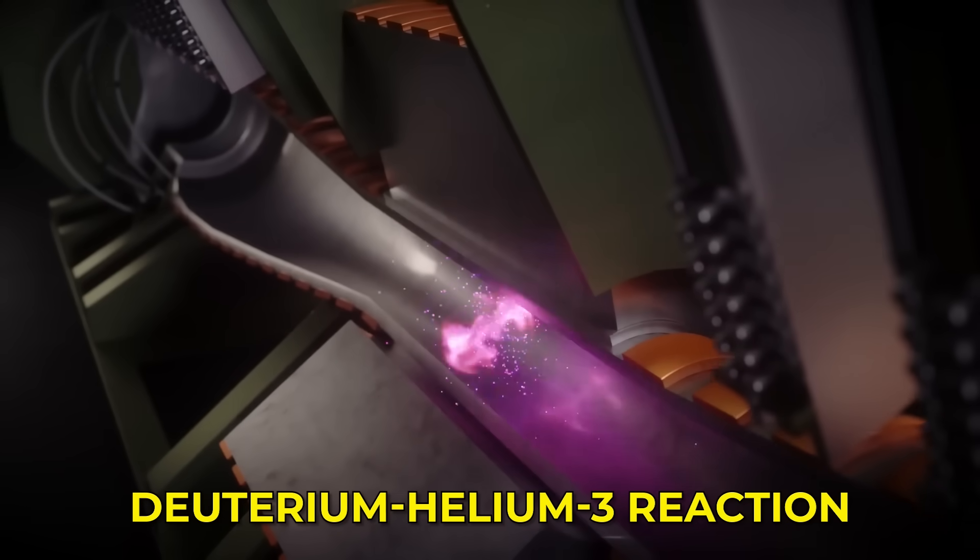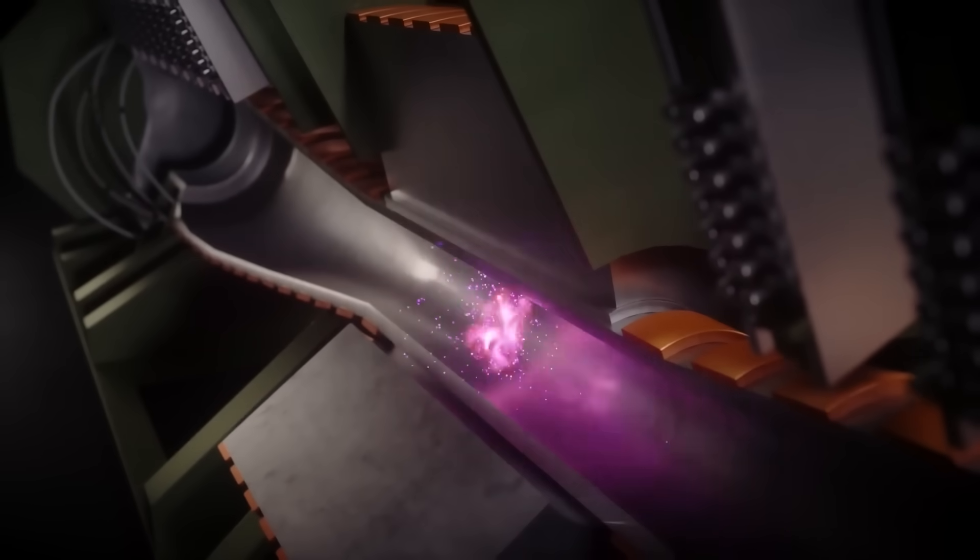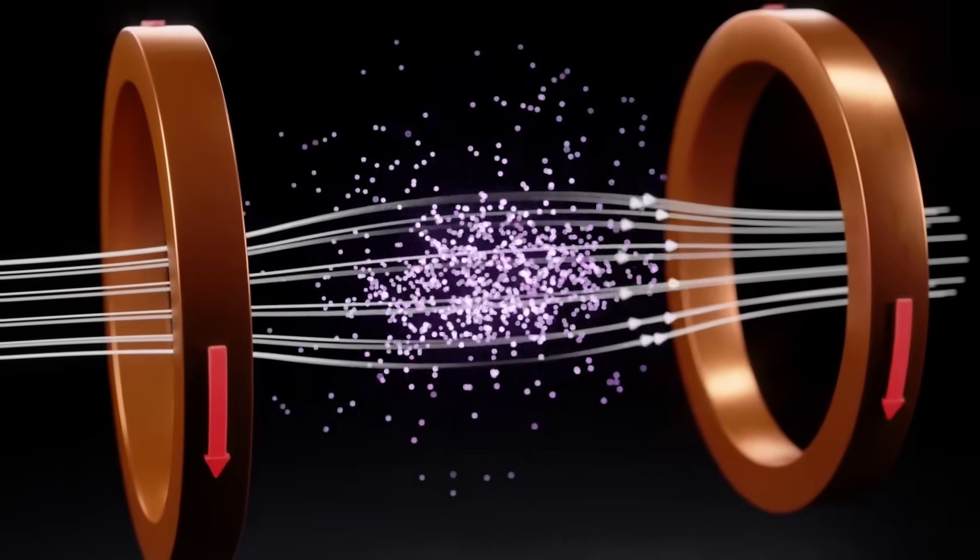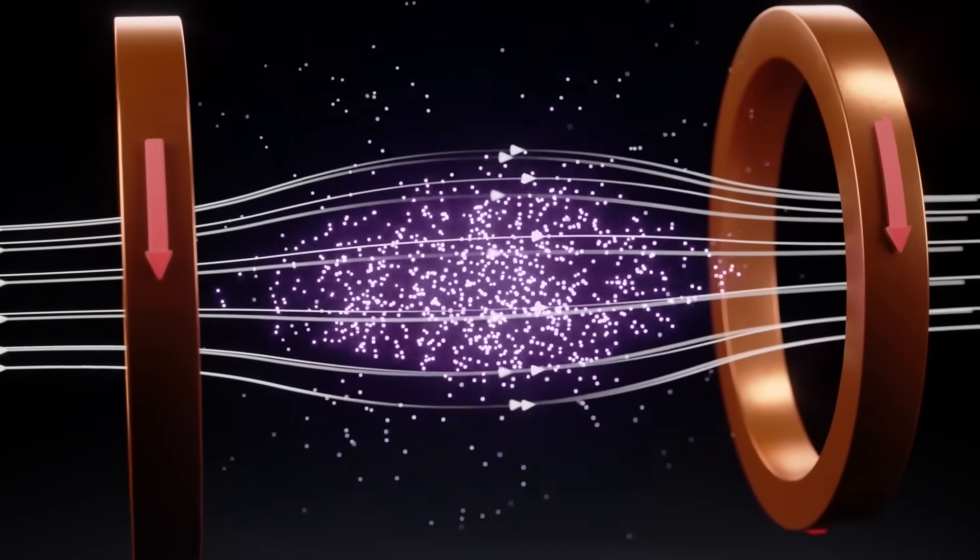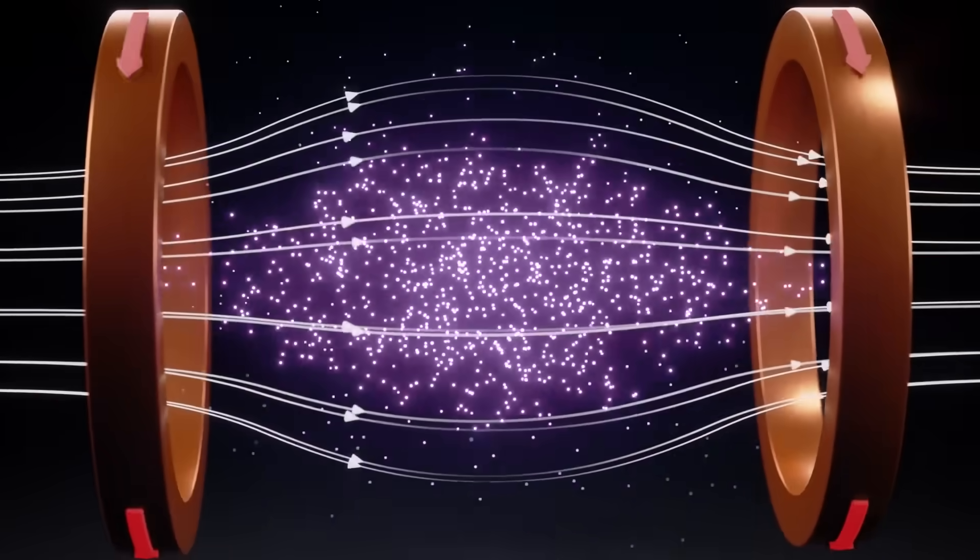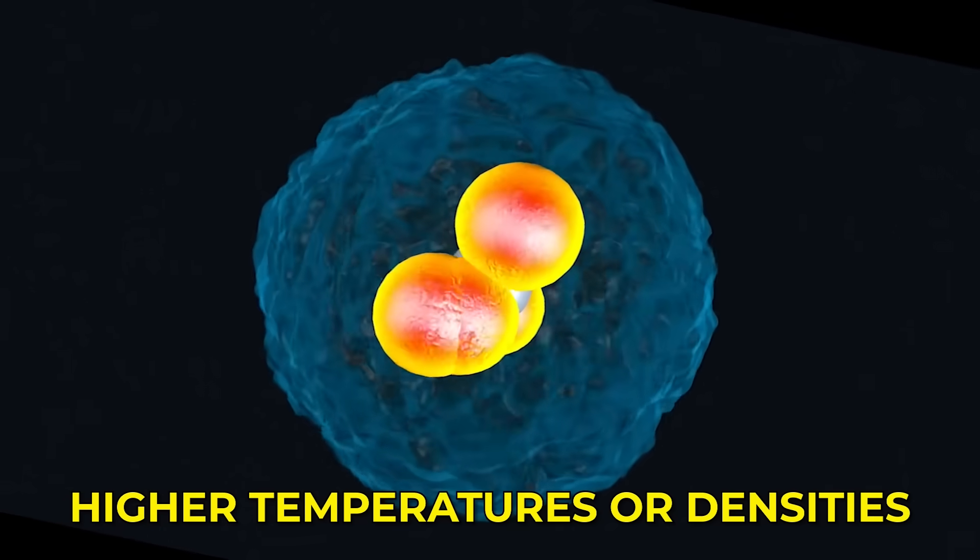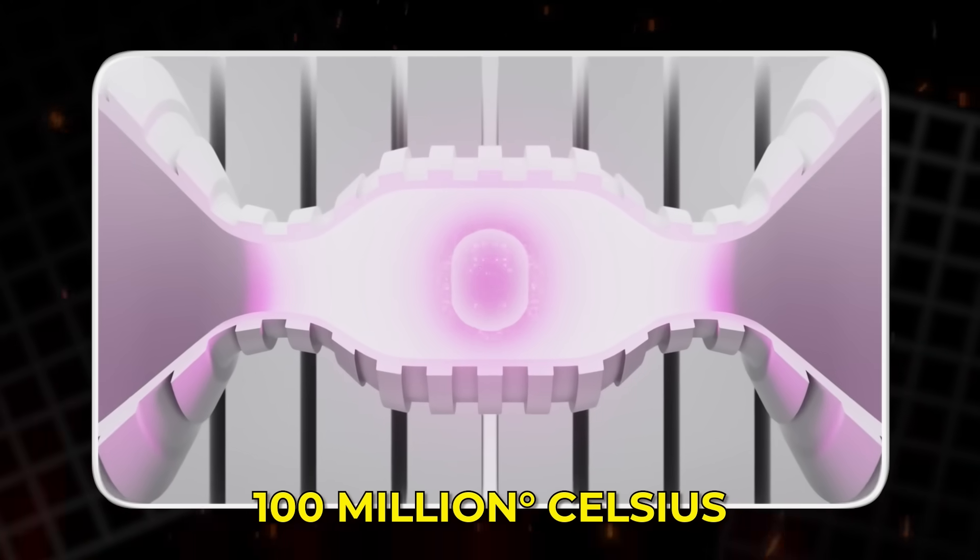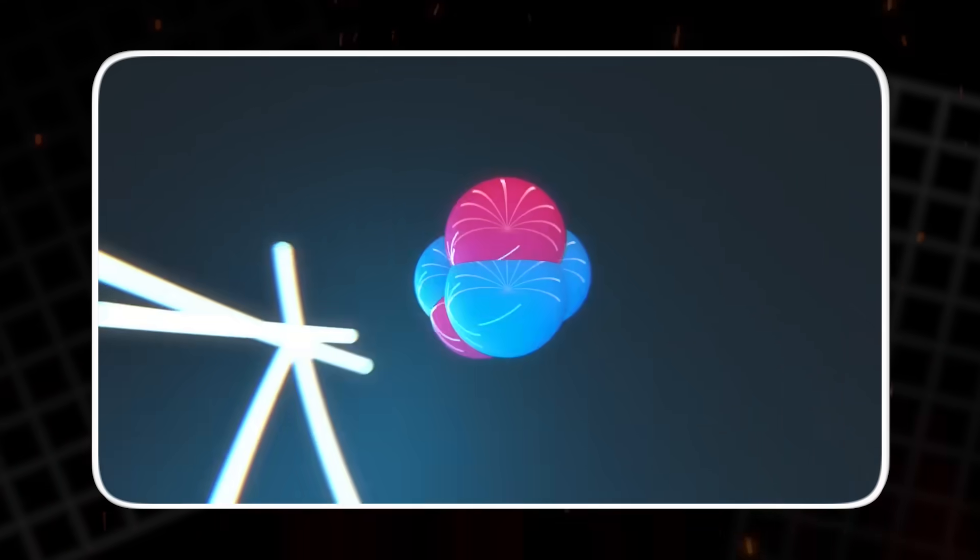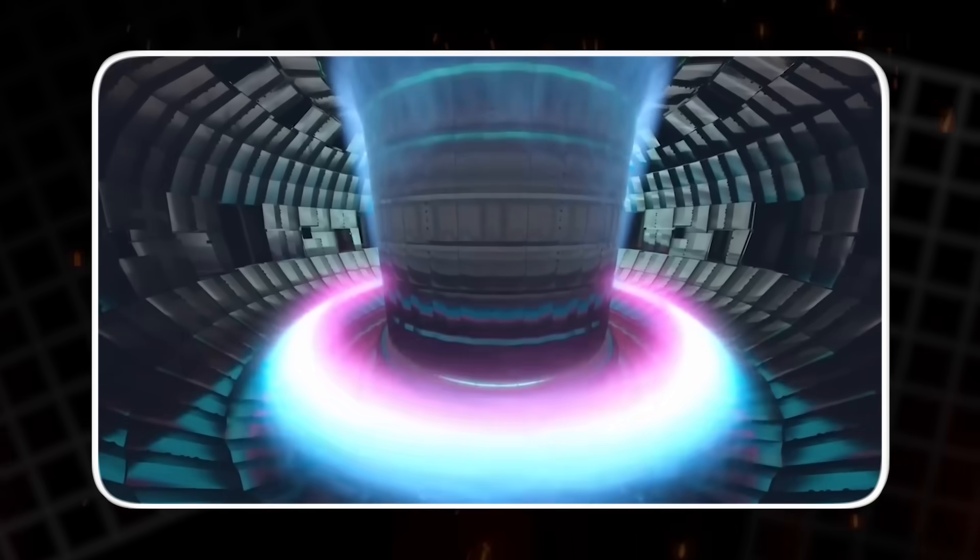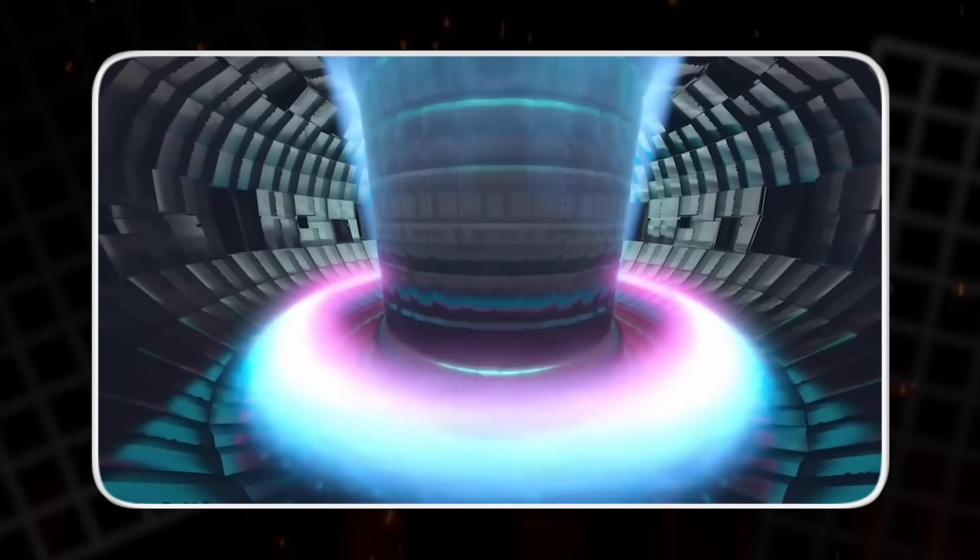The deuterium-helium-3 reaction is much less reactive than deuterium-tritium. That means the atomic nuclei must collide with far greater force to fuse, which requires much higher temperatures or densities. A deuterium-tritium plasma can ignite at around 100 million degrees Celsius, while a deuterium-helium-3 plasma would need several times that temperature to reach the same reaction rate.